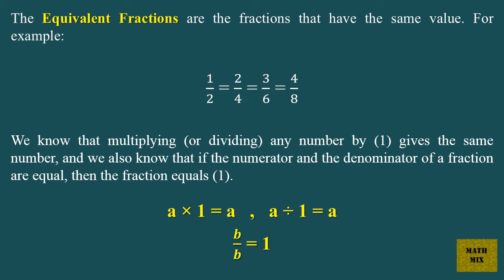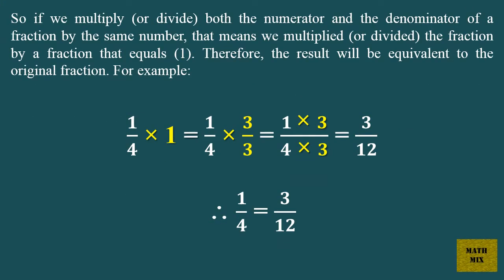Since b over b equals 1, if we multiply or divide both the numerator and the denominator of a fraction by the same number, that means we multiplied or divided the fraction by a fraction that equals 1. Therefore the result will be equivalent to the original fraction. For example, 1 over 4 times 1 equals 1 over 4 times 3 over 3, which equals 3 over 12. Therefore 1 over 4 equals 3 over 12.